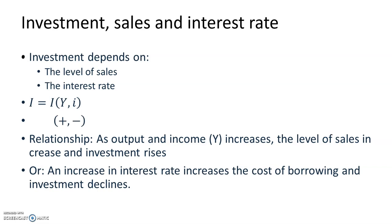Investment depends on two factors: the level of sales and the interest rate. To capture these two effects, we write the investment relation as I = I(Y, i), where the positive sign under Y indicates that an increase in production — equivalently, an increase in sales — leads to an increase in investment, and the negative sign under the interest rate i indicates that an increase in the interest rate leads to a decrease in investment.